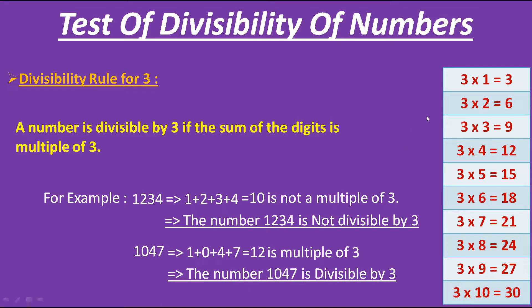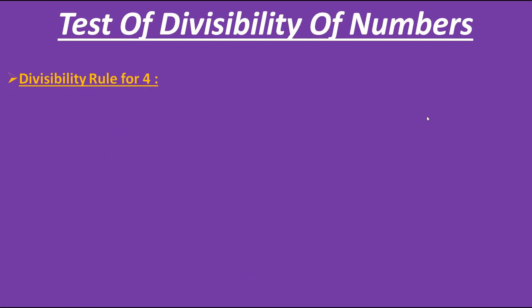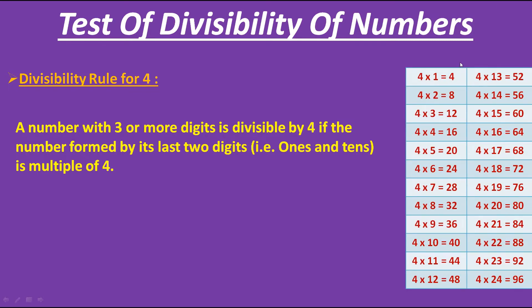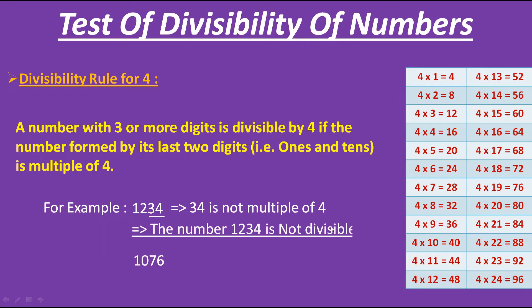Now let's move to the next divisibility rule, that is for 4. It says that a number with 3 or more digits is divisible by 4 if the number formed by its last two digits is divisible by 4, then that whole number is divisible by 4. For that, you have to remember the multiples of 4 — we should know the two-digit multiples up to 96. Now let's take examples. The number formed by the last two digits is 34 — let's check whether 34 is a multiple of 4. We have 32 and 36 but not 34. As 34 is not a multiple of 4, the number 1234 is not divisible by 4.